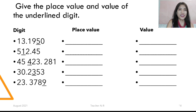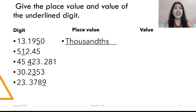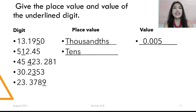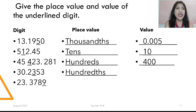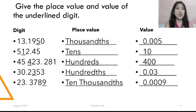Let's have this next drill: give the place value and value of the underlined digit. Try to answer it. The place value of 5 is thousandths and the value is 0.005. The value of 1 — the place value is tens and the value is 10. The underlined 4 has a place value of hundreds and the value is 400. The place value of 3 is hundredths and the value is 0.03. The place value of 9 is ten-thousandths and the value is 0.000009.